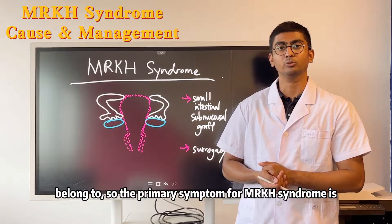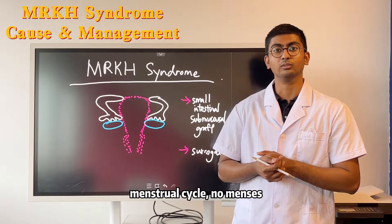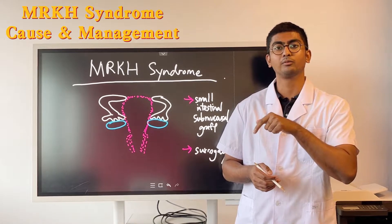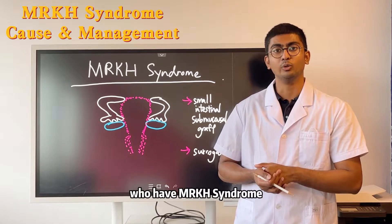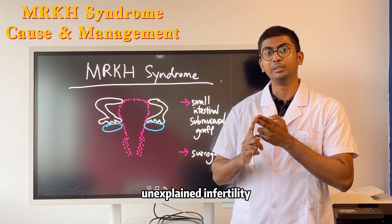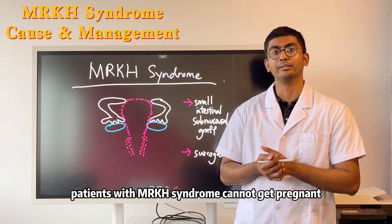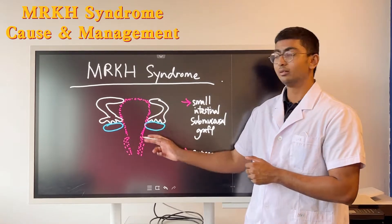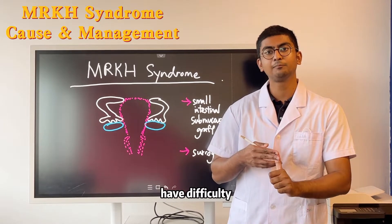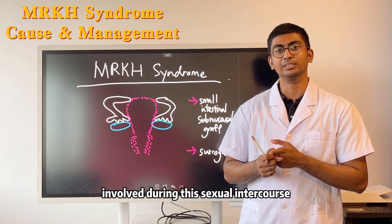The primary symptom of MRKH syndrome is primary amenorrhea — they experience no menstrual cycle, no menses, from early age through adulthood. Patients also experience unexplained infertility; it is impossible for them to carry a child due to the absence of a uterus. Additionally, they will have difficulty and pain during sexual intercourse.